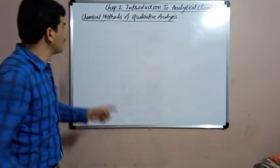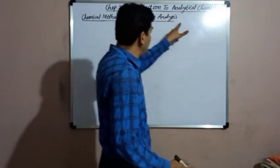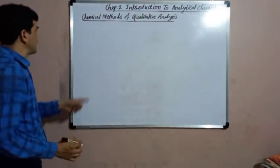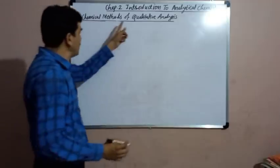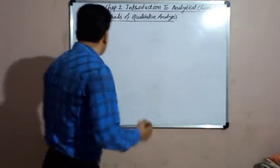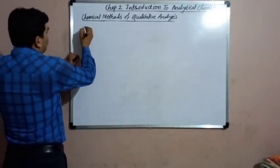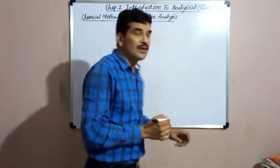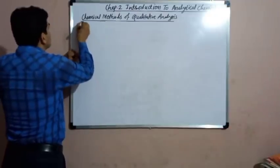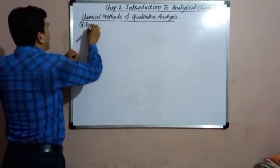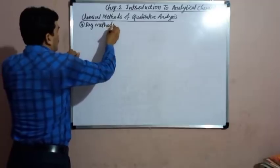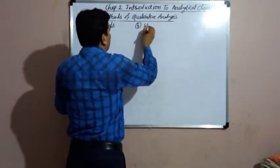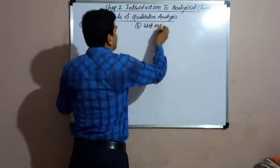So today we are going to study the chemical methods of qualitative analysis and the chemical methods of quantitative analysis. In the chemical methods of qualitative analysis, there are two types of methods: dry methods and wet methods.